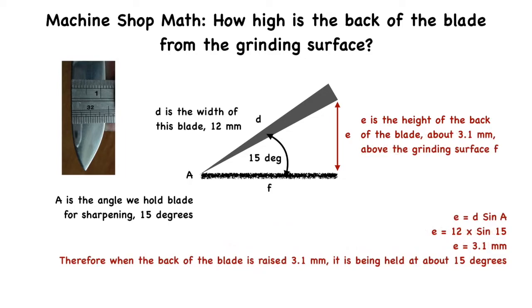Using some machine shop math, I can determine the height E from the grinding surface. I measure D, the width of the blade, to be about 12 millimeters. E equals D times the sine of A, or E equals 12 millimeters times the sine of 15 degrees, giving the result of 3.1 millimeters. Therefore, when the back of the blade is raised 3.1 millimeters, it is being held at about 15 degrees.